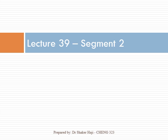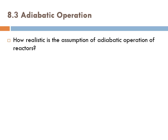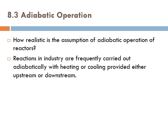Let's continue with Lecture 39. We're going to start with the adiabatic reactor for deriving an equation for T. How realistic is the assumption of adiabatic operation of reactors? It's very realistic and often found in industry. Reactions in industry are frequently carried out adiabatically with heating or cooling provided either upstream or downstream.